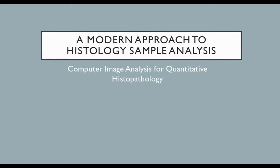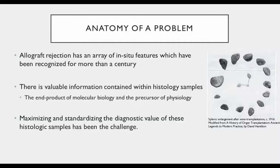My research team has chosen to utilize modern computational approaches to bring objectivity and quantitation to the traditionally subjective and qualitative discipline of histopathology. Histology is a very old field, and even something as seemingly modern as allograft rejection has morphologic characteristics recognized for more than a century. Histology is fundamentally the end product of molecular biology and a precursor of physiology, and should be expected to contain some pretty valuable information. The issue facing the transplant field has been how to maximize and standardize the extraction of this valuable information, since simplified qualitative H&E-based grading criteria have not been very satisfying.